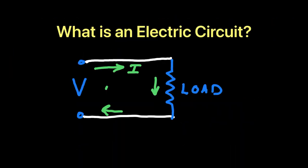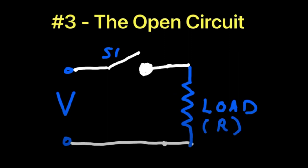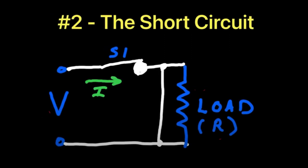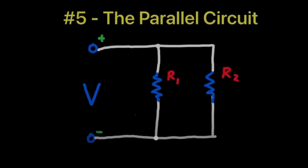We'll start with the three elements needed to form an electric circuit, then go on to the basic circuit types, including the closed circuit, the open circuit, the short circuit, the series circuit, and the parallel circuit.